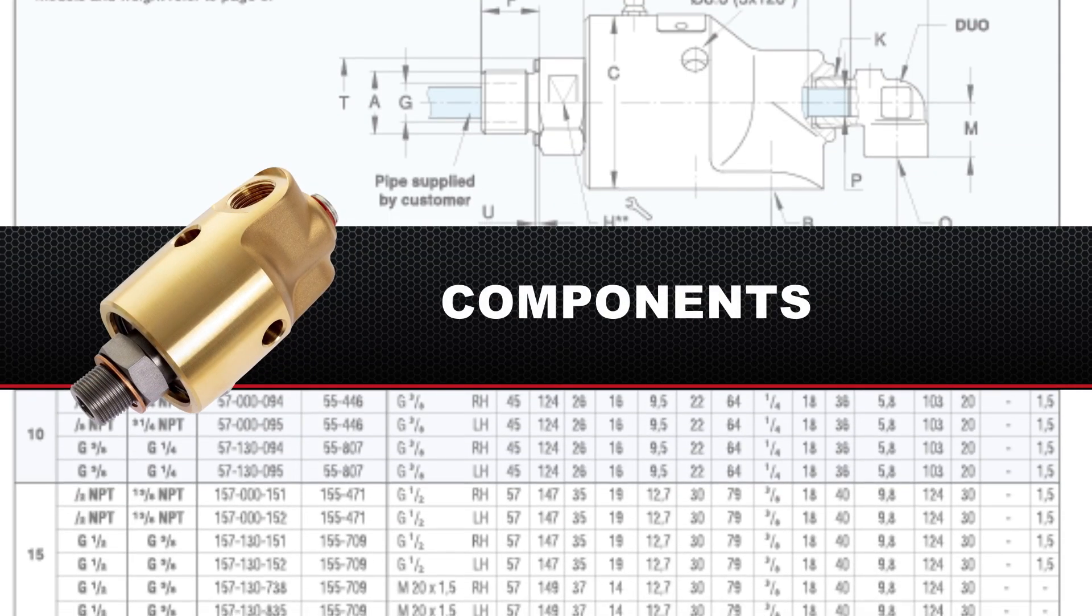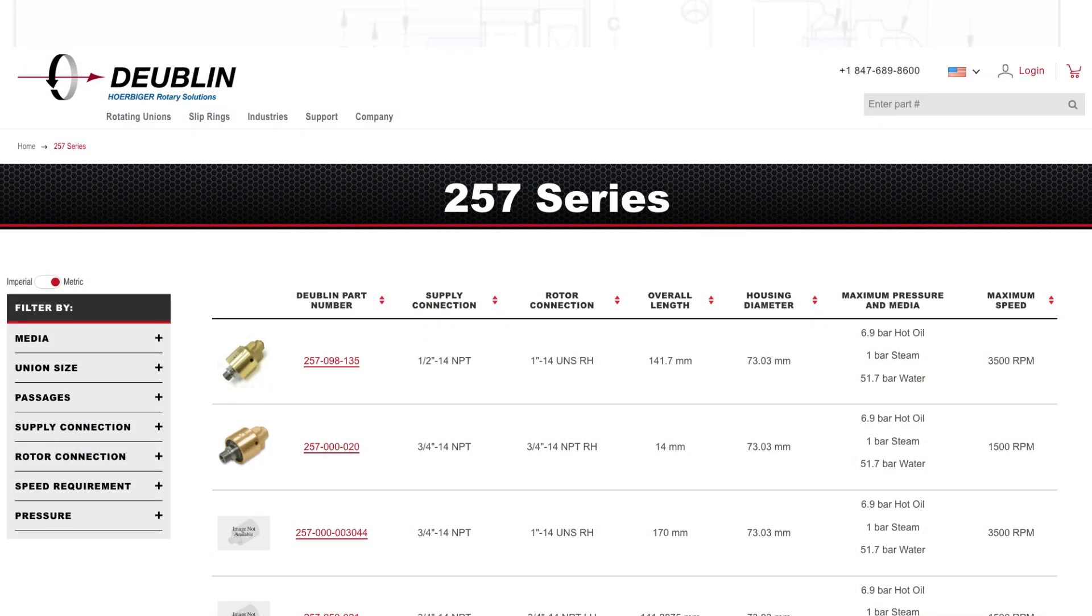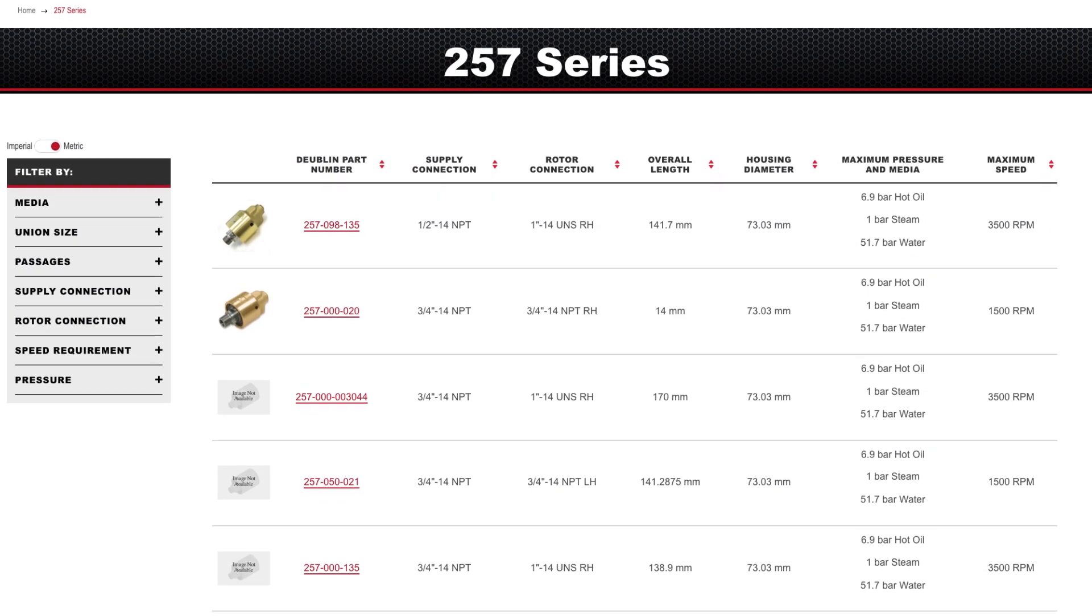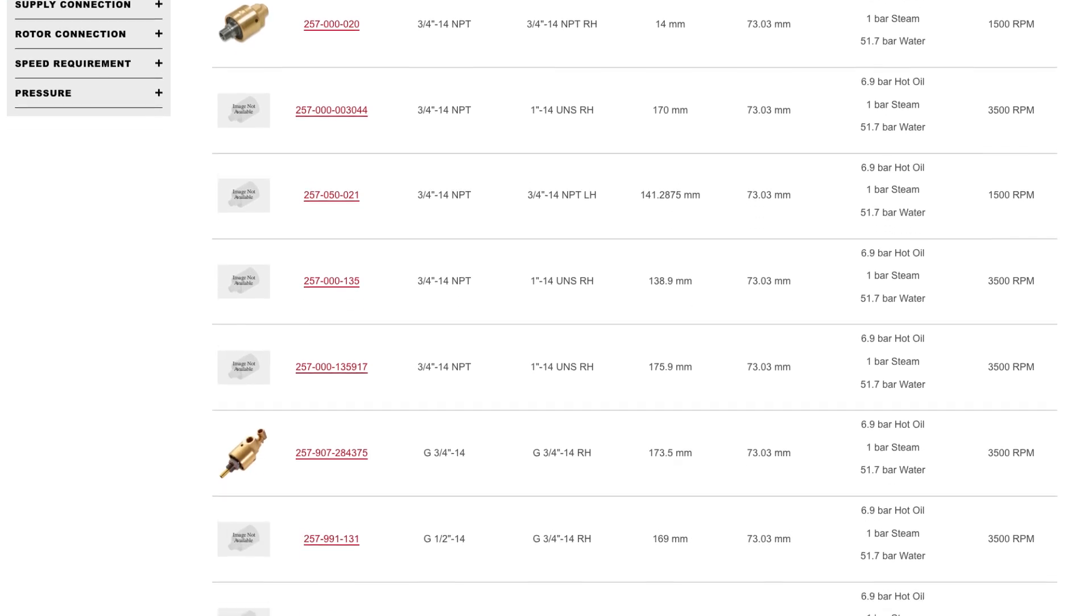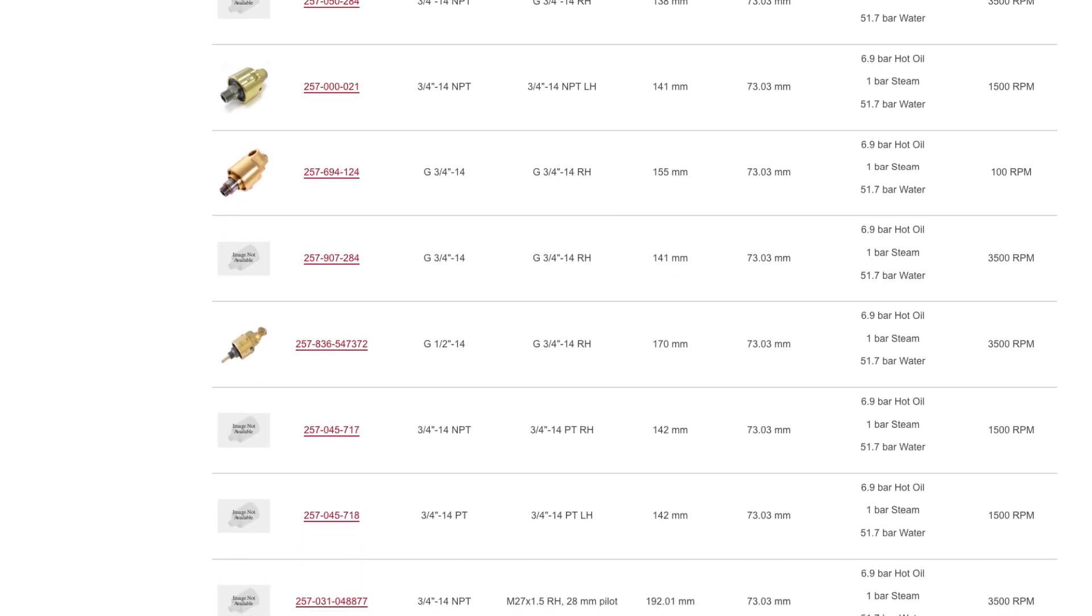First, let's have a look at the components of the 57 Series. The 57 Series spans a range of sizes. Regardless of which size 57 Series Union is used by your application, the components are fundamentally the same.